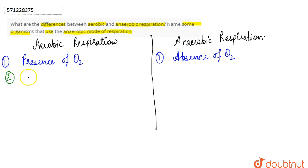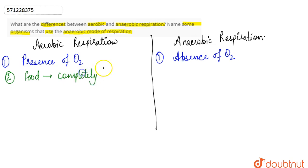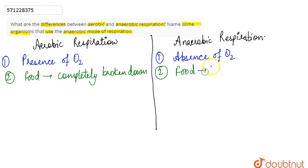The second point of difference is that in case of aerobic respiration, the food is completely broken down. Whereas in case of anaerobic respiration, the food is only partially broken down.